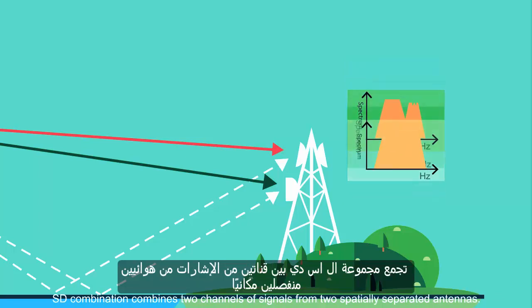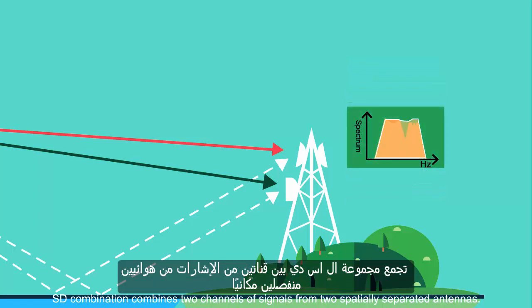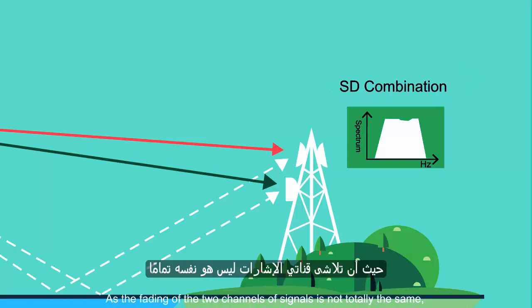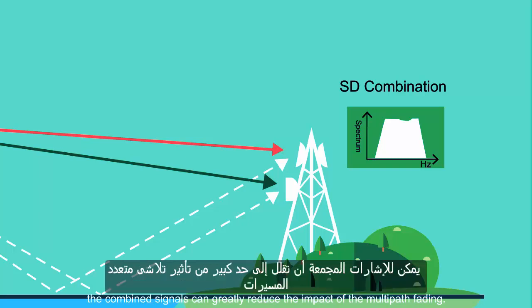SD combination combines two channels of signals from two spatially separated antennas. As the fading of the two channels of signals is not totally the same, the combined signals can greatly reduce the impact of the multipath fading.